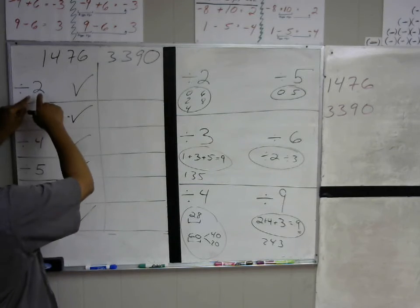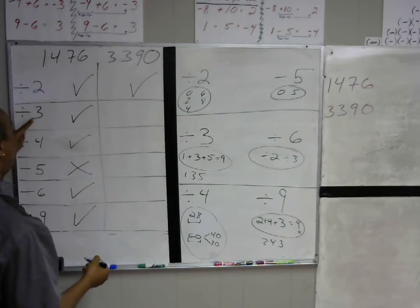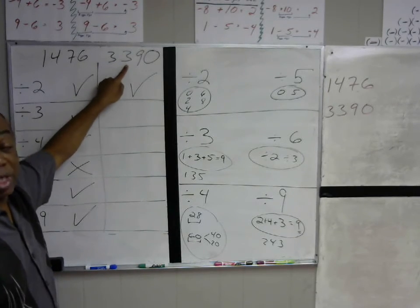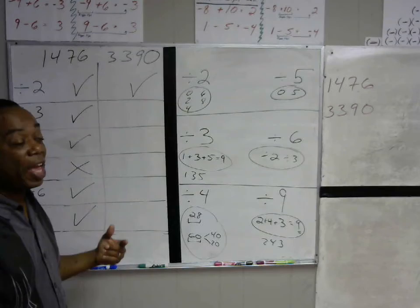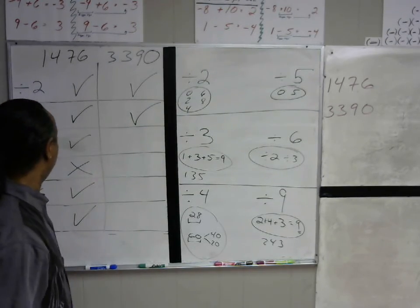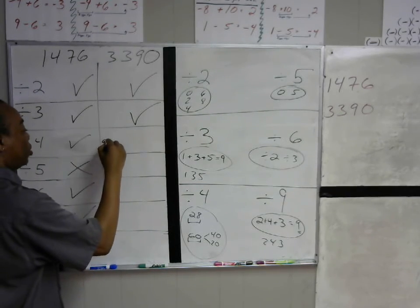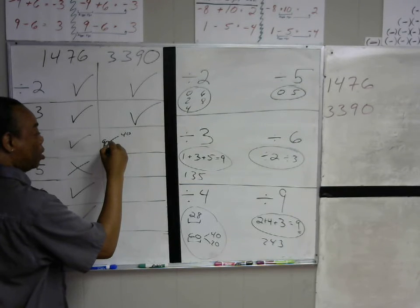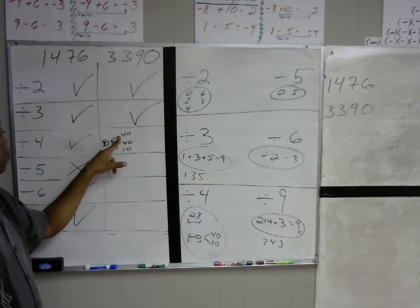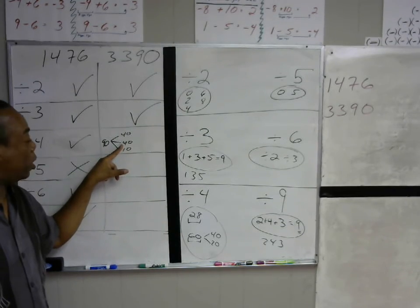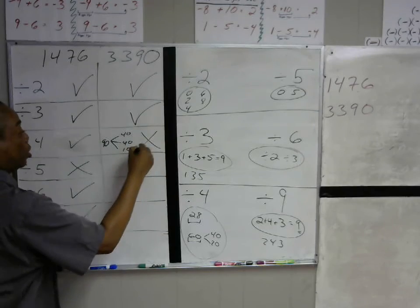Last one: can 3390 be divided by 2? The last digit is zero, and zero is in the two times tables, so yes. Can it be divided by 3? 3 plus 3 is 6, and 6 plus 9 is 15, and 15 plus 0 is still 15. 15 is in the three times tables, so this can be divided by 3. For 4: is 90 in the four times tables? I'll break 90 into three pieces — 40, 40, and 10. Both 40s are in the four times tables, but the remaining 10 is not, so 3390 is not divisible by 4.